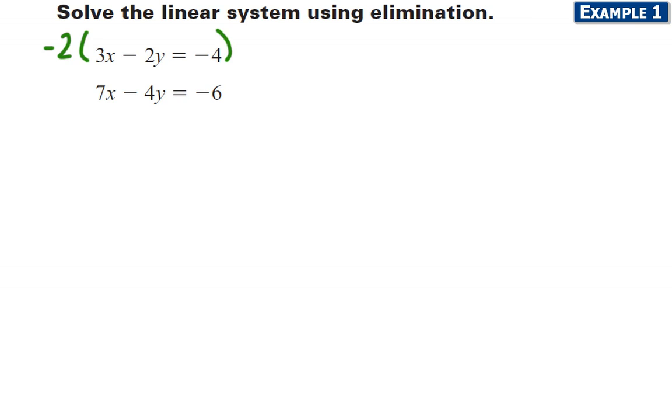This is going to make the first equation negative 6x plus 4y equal to positive 8. The second equation I'm not actually going to do anything to it. I'm just going to leave it the way it is so that I've got opposite coefficients for the y terms.